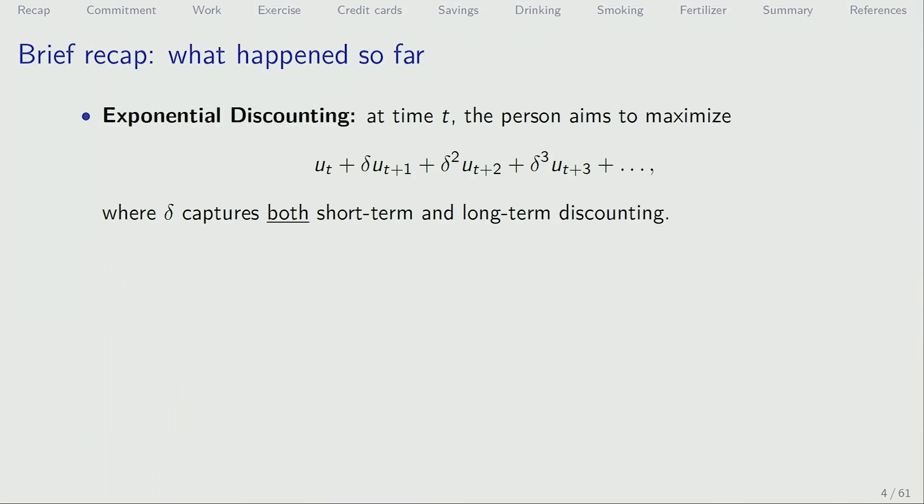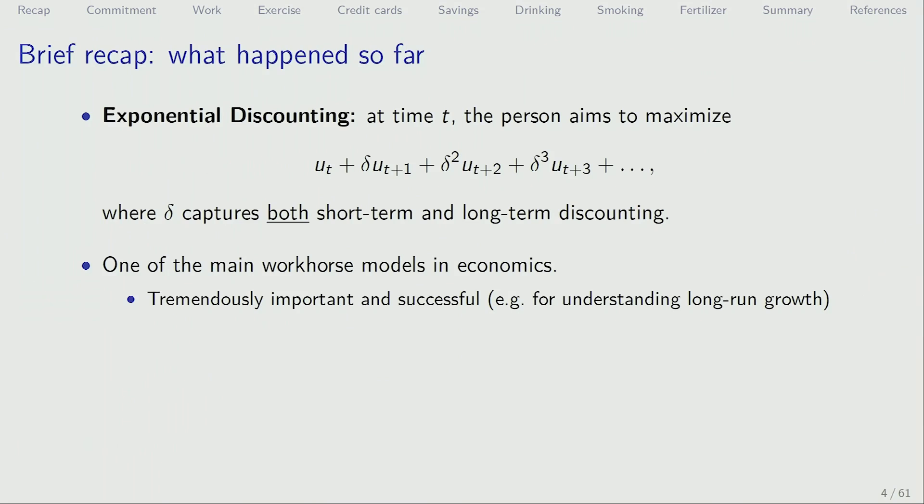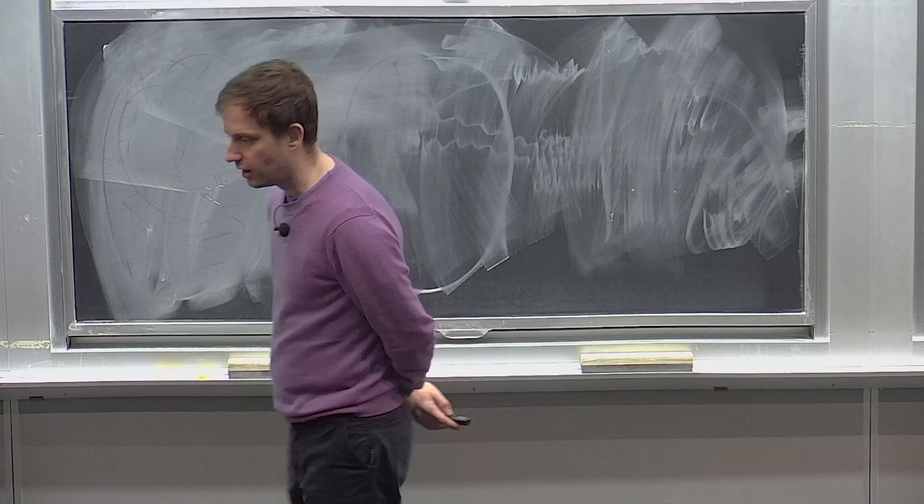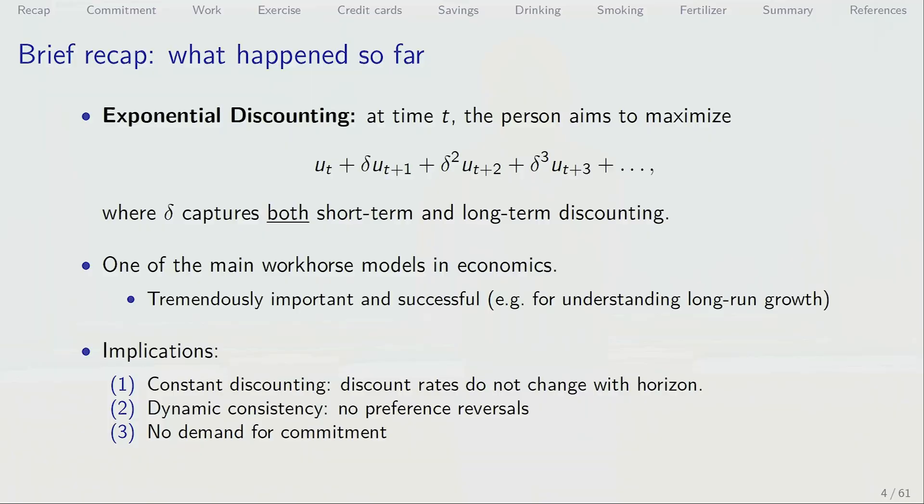What happened so far is I showed you a simple model of exponential discounting. That's the workhorse model of discounting in economics — one of the most successful and most important models that people have written down. The Solow model and many different important models thinking about long-run growth use this particular model. So it's been tremendously important and successful.